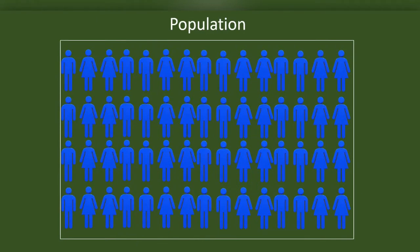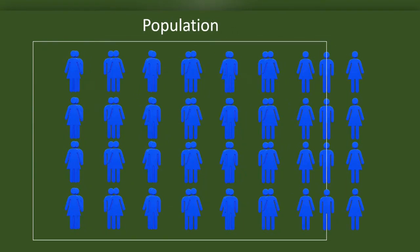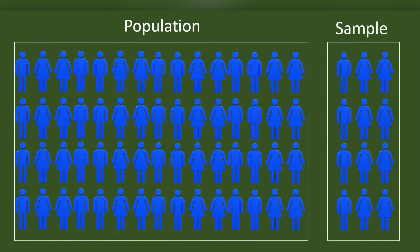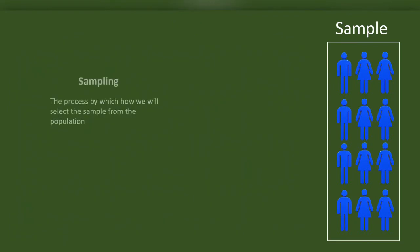Many scientific truths we generalize in the population were based on the findings of research in a sample of that population. Sampling can be defined as the process by which we select the sample from the population.